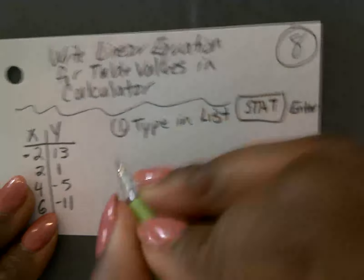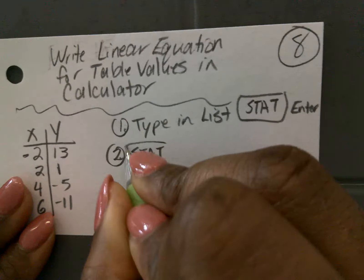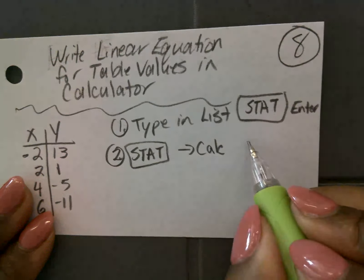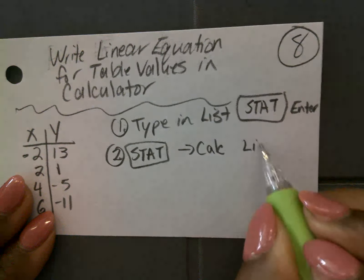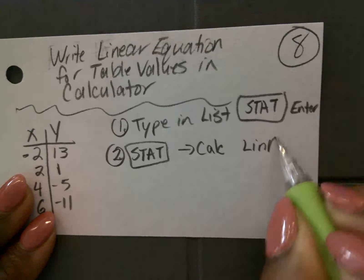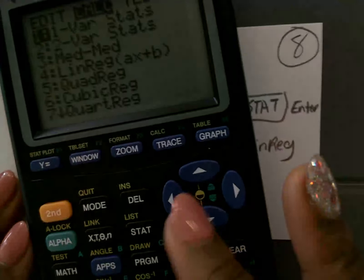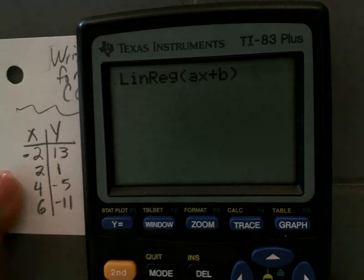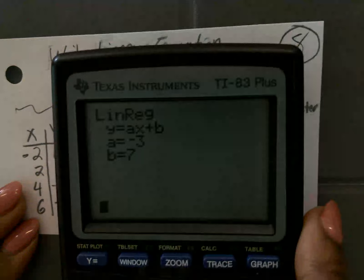We go to stat. We go to stat. And then what? LinReg. Calc LinReg. So we're going to go to, we've got to go back to stat. Then we slide over to calc. And then we choose number four, LinReg, right? Okay. After we press LinReg, from here we can press enter, and that'll give us the equation. You see it?